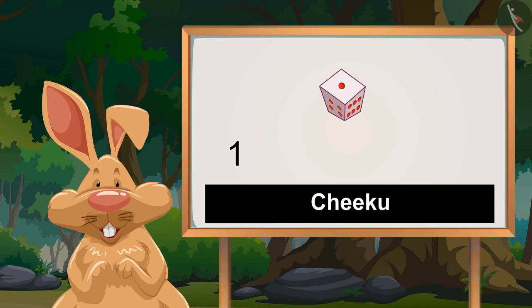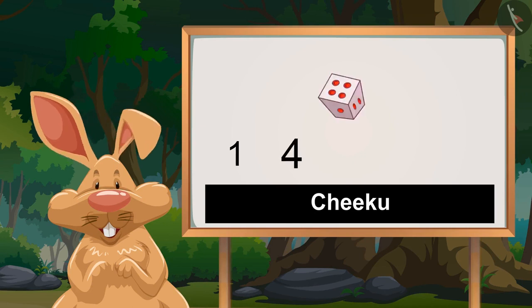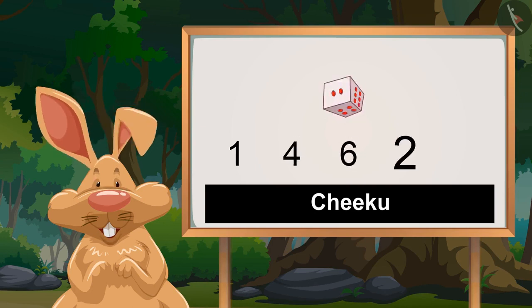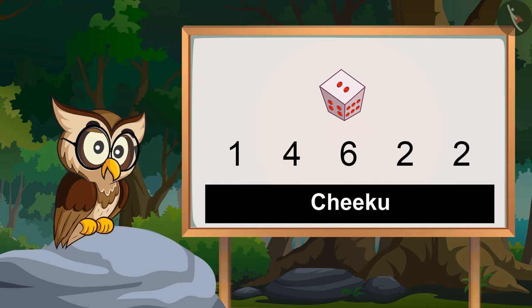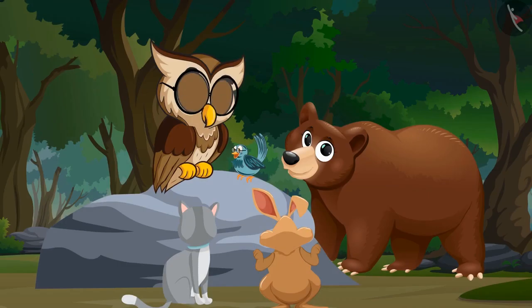Okay, I will roll first. One, four, six, two, two. So Chiku got these numbers on the dice.